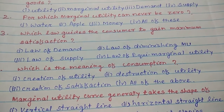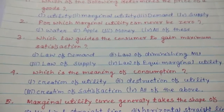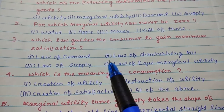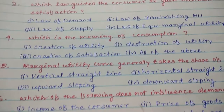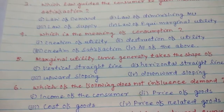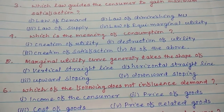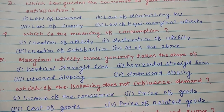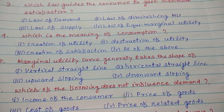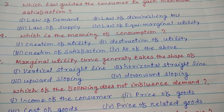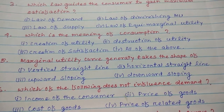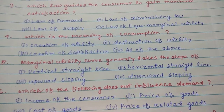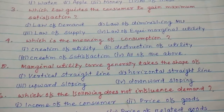Number four: Which is the meaning of consumption? I. Creation of utility, II. Destruction of utility, III. Creation of satisfaction, IV. All of the above. In economics, consumption refers to the destruction of utility for the satisfaction of human wants. So the answer for number four is II. Destruction of utility.